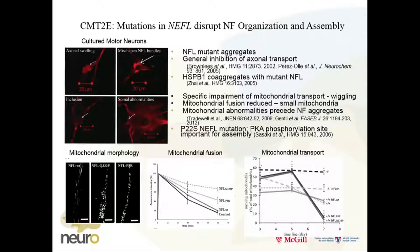The transport also crashes after a few days of expressing the mutant. What's also interesting is a new phenomenon we call 'wiggling': when mitochondria were stationary, they didn't just stop — they wiggled. This happened in the NFL knockout as well. What that indicates is that neurofilaments are very important for anchoring mitochondria — this has been known for desmin in muscle.